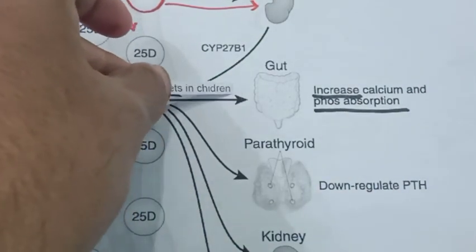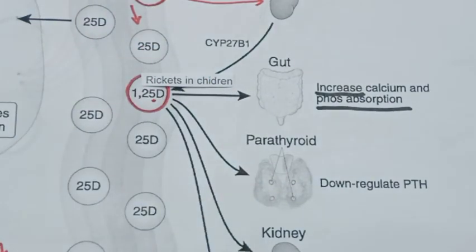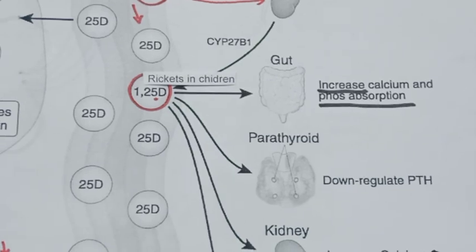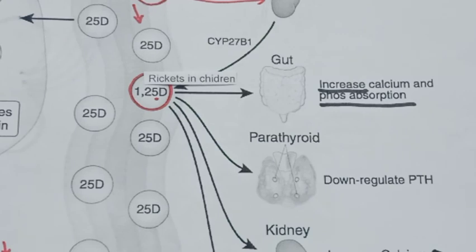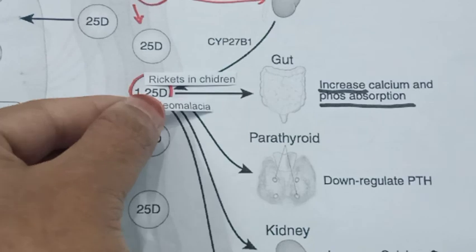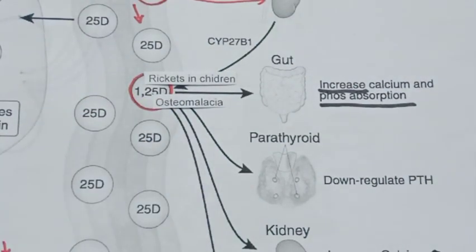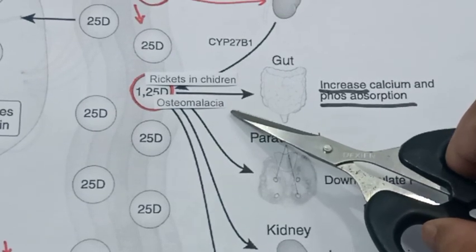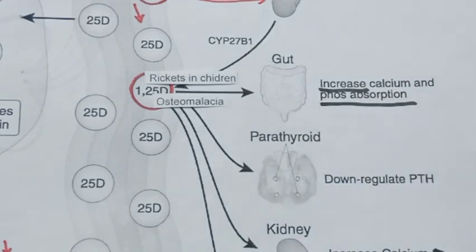Vitamin D deficiency also creates a condition called rickets, which means softening of the bones in childhood, where bones become very delicate and soft, and the body structure becomes altered. Osteomalacia is a related deficiency condition meaning softening of the bone in adults. So rickets occurs in children and osteomalacia occurs in adults in cases of vitamin D deficiency.